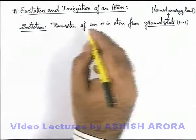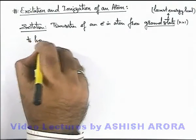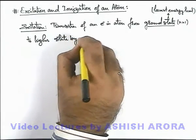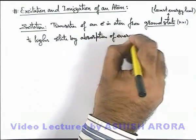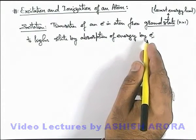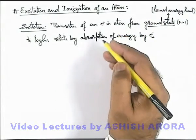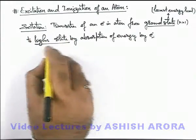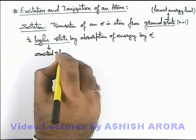So excitation is termed as the transition of an electron in an atom from ground state to a higher state, by absorption of energy by this electron. When the electron absorbs some energy and makes a transition from ground state to a higher state, or any lower energy level to a higher energy level, this phenomenon we call excitation. The higher state to which the electron is transitioning is termed as the excited state of the electron.